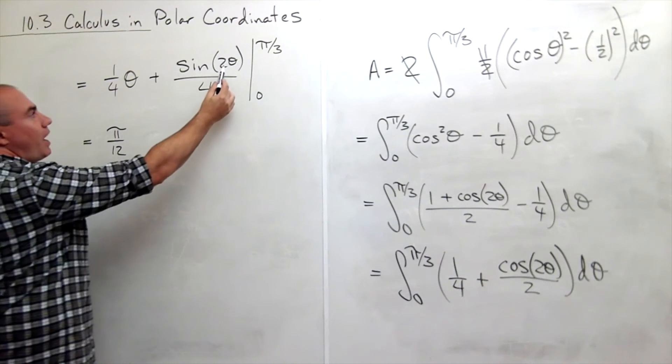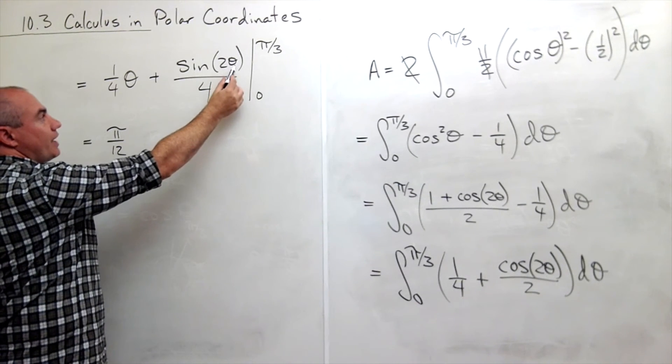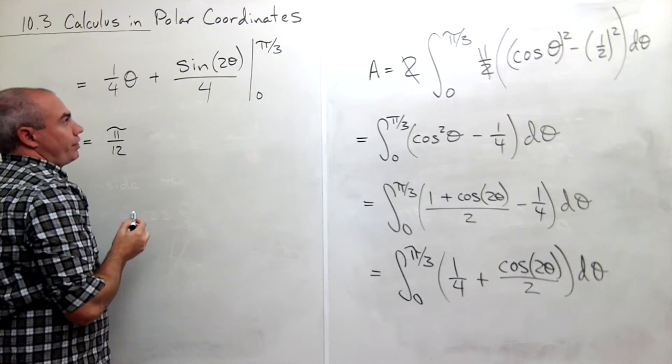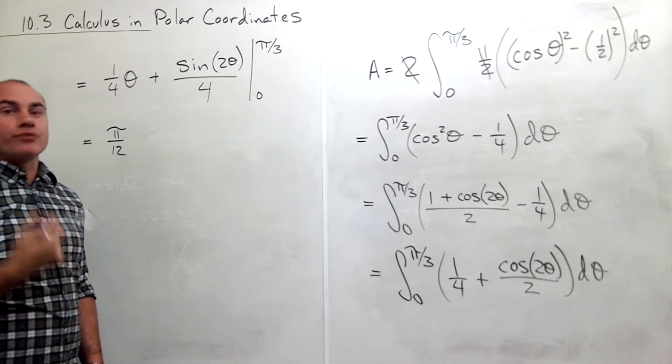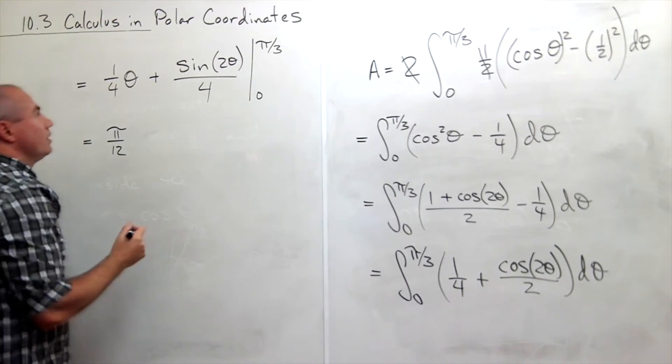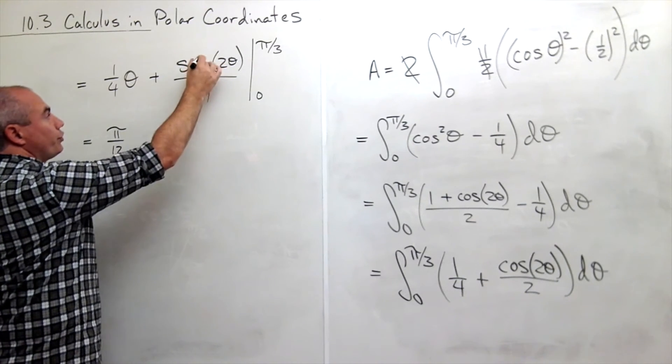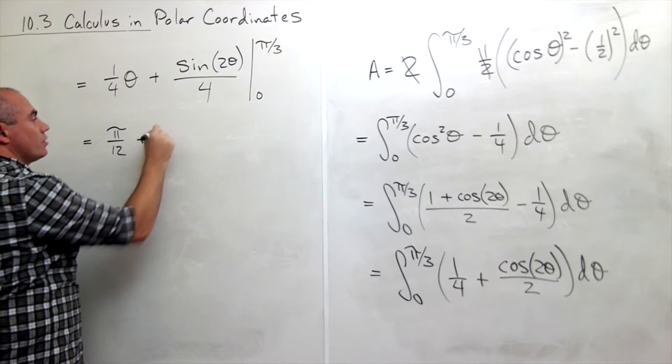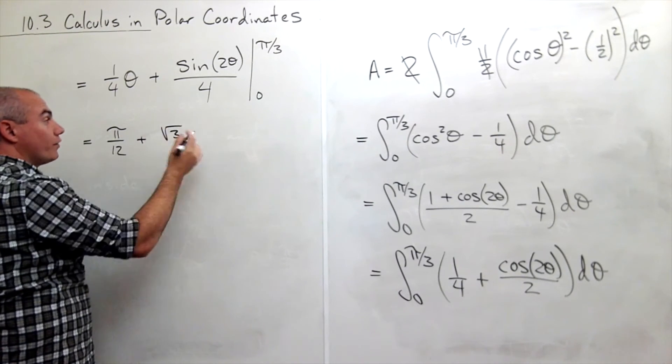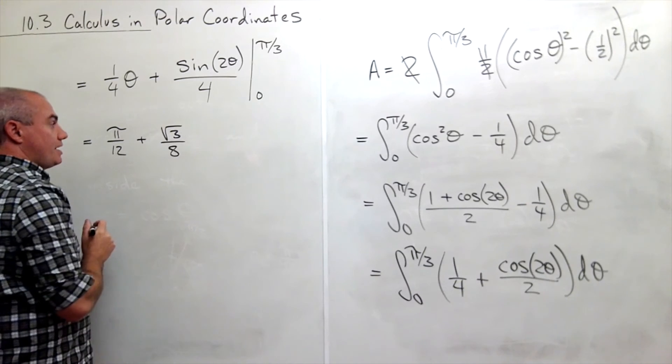If I plug in pi over 3 for theta here, I get 2 pi over 3. Sine of 2 pi over 3 would be root 3 over 2. So I get root 3 over 2 divided by 4. So this is root 3 over 2 divided by 4 would be root 3 over 8.